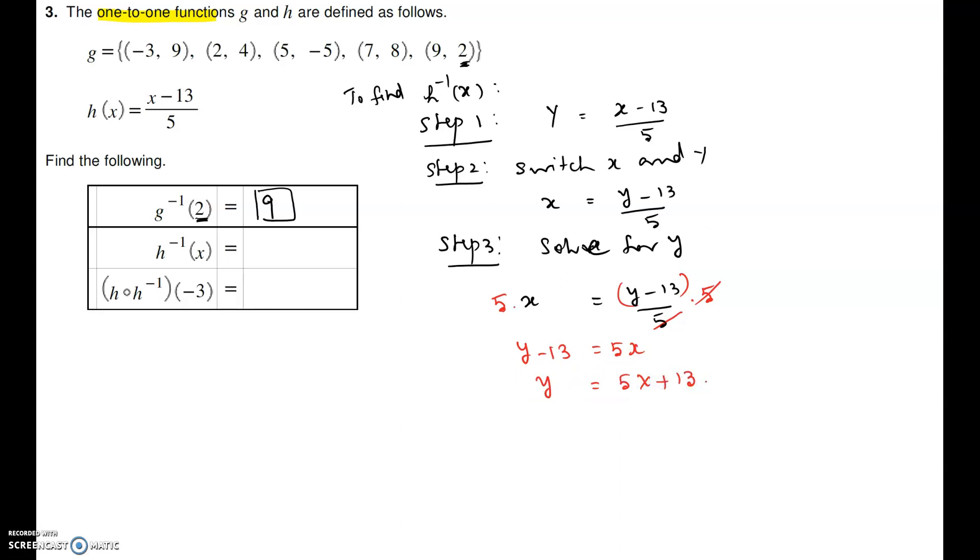So we get y minus 13 equal to 5x or y equal to 5x plus 13. Then step 4 is to write y as h inverse of x. So h inverse of x equal to 5x plus 13.